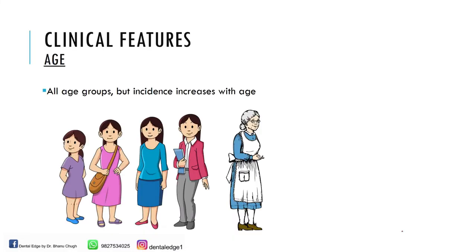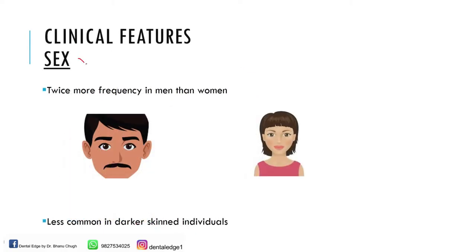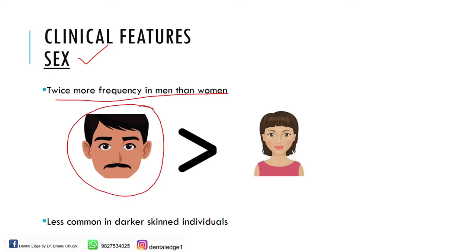Coming to the clinical features — regarding the most common age, it can occur in all age groups but the incidence increases with age, so it is more commonly seen in elderly or middle-aged persons than in younger individuals. Regarding sex predilection, it is twice more frequently seen in men than in women. Also remember that it is less common in dark-skinned individuals — it is more common in fair-skinned people.